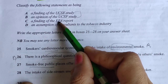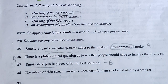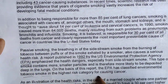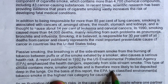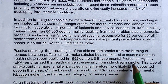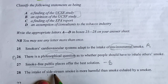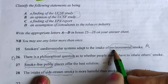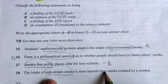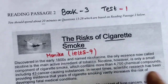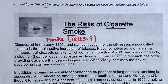Now the EPA question is left. EPA is found in this paragraph — it 'emphasizes the health danger especially from side-stream smoke' which is more harmful than smoke exhaled by smokers. With the help of keywords like 'philosophical question,' 'environmental,' and 'side-stream,' we have found the answers. So this will come with C. This way we have completed this reading — 'The Risk of Cigarette Smoke.' Thank you so much.